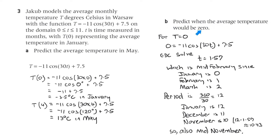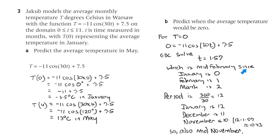B: predict when the average temperature would be 0. That's when the function equals 0: 0 equals minus 11 cosine 30T plus 7.5. We put that in the GDC and use the solve function, and we get T equals 1.57, which is mid-February. Since January is 0 and February is 1, 1.57 would be mid-February. The period is 360 divided by B, which is 12 months. So mid-November will also give the function equal to 0. The answer is mid-February and mid-November.